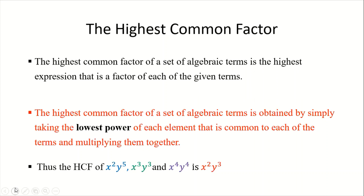For example, the highest common factor of x²y², x³y³, and x⁴y⁴ is x²y³. Each term has x raised to some power, but the lowest degree is x², so we take that. For the y terms, the lowest power is y³. We multiply them together to get the highest expression that is a factor of each term.